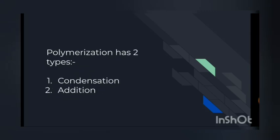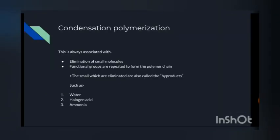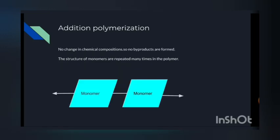Polymerization has two types. Number one is condensation polymerization, and number two is addition polymerization. Condensation polymerization is always associated with elimination of small molecules. Functional groups are repeated to form the polymer chain. The small molecules which are eliminated are also called byproducts — some of the byproducts are water, halogen acid, and ammonia. In addition polymerization, there is no change in chemical composition, so no byproducts are formed. The structure of monomers is repeated many times in the polymer.